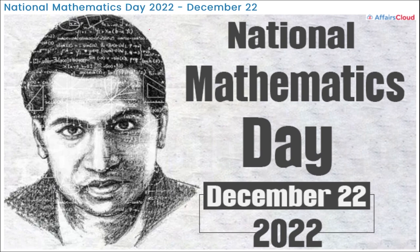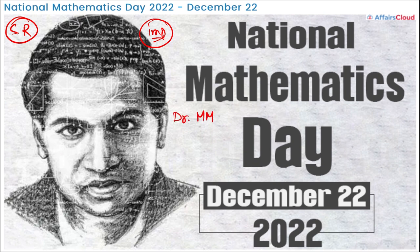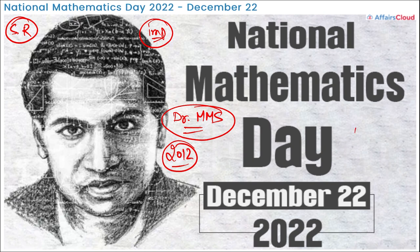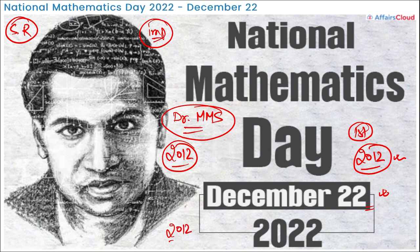National Mathematics Day is observed on 22nd December in memory of renowned Indian mathematician S. Ramanujan, on his birth anniversary. This day was started by former Prime Minister Dr. Manmohan Singh in 2012. The first edition was observed in 2012, and 2012 was also declared as the National Mathematics Year by Dr. Manmohan Singh.